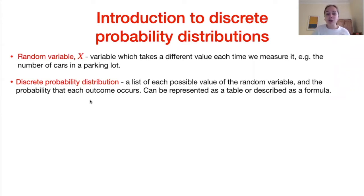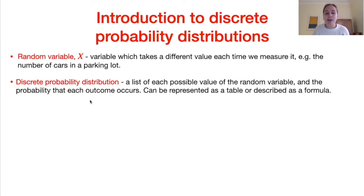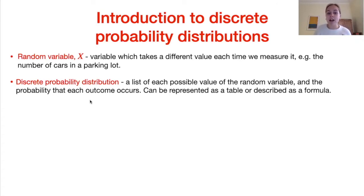A discrete probability distribution is a list of each possible value that the random variable can take and the probability that each outcome occurs. We can represent this as a table or described as a formula. For example, if we're talking about cars in a parking lot with capacity 200, the values the random variable could take would be all integer values from 0 to 200, and the distribution would also tell us the probability of that number of cars being in the lot.